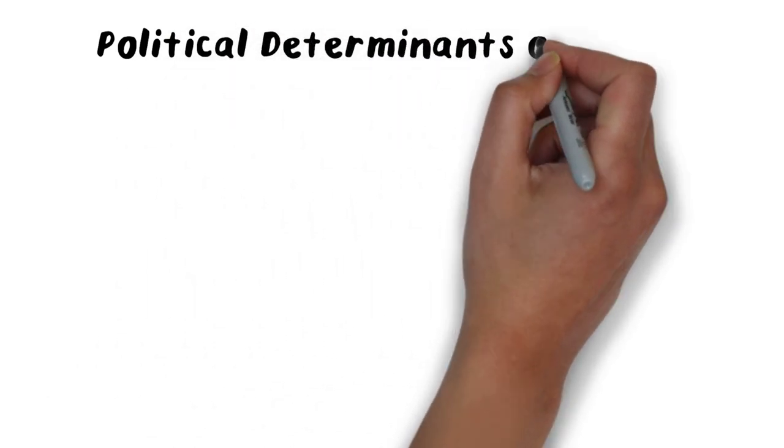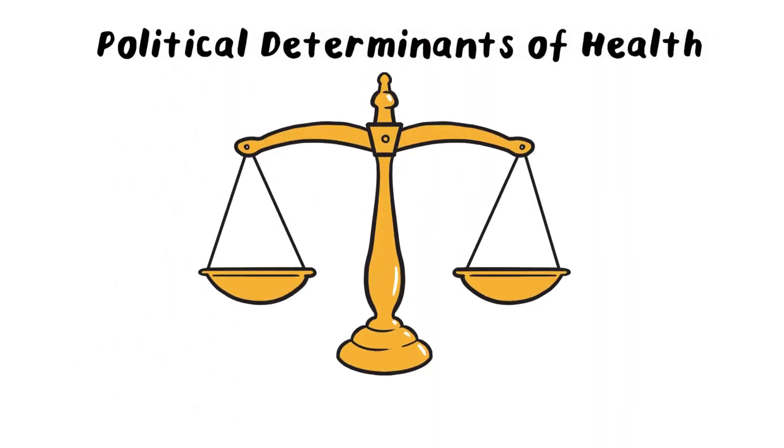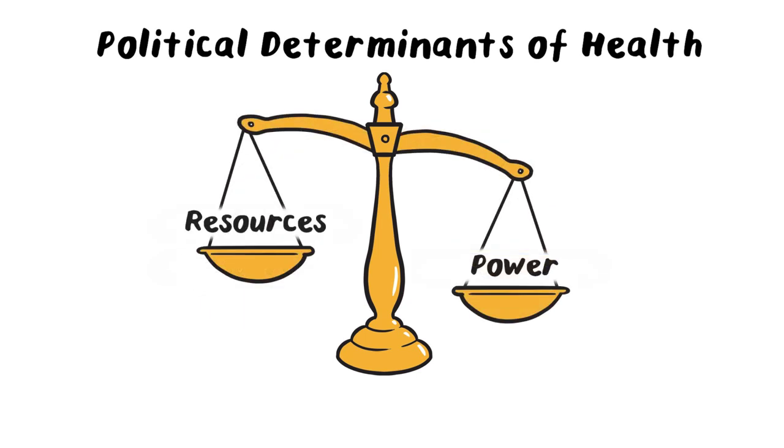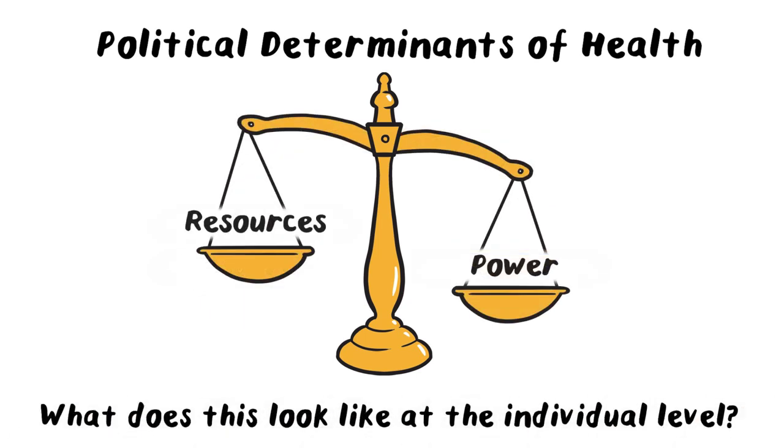The political determinants of health include how we structure relationships, how we distribute resources, and how we administer power. What does this look like at the individual level?